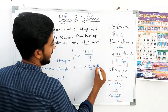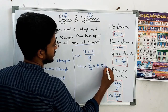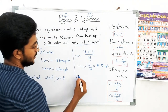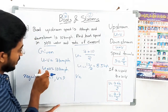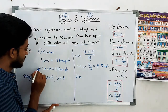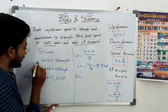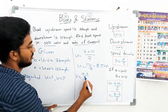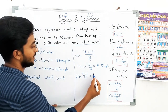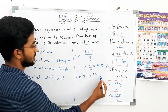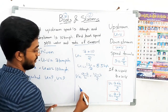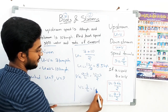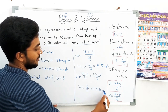So U equals 7 plus 10 divided by 2, that is 17 by 2, which equals 8.5 kmph. Next, V equals A minus B divided by 2, so V equals 10 minus 7 divided by 2, which is 3 by 2, equals 1.5 kmph. The greater value is downstream.